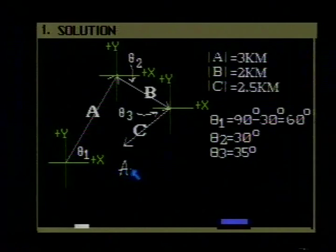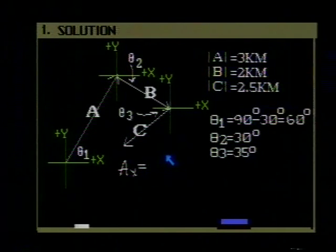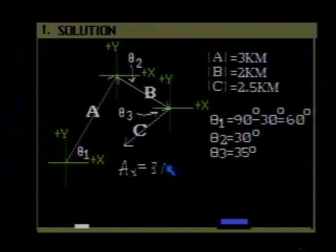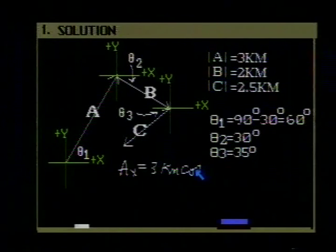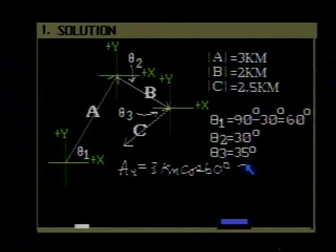A sub x would be equal to the magnitude of A, 3 kilometers, times the cosine of 60 degrees. And if you work that out on your calculator, you will get a value here of 1.50 kilometers.